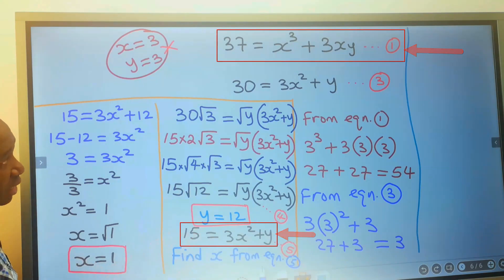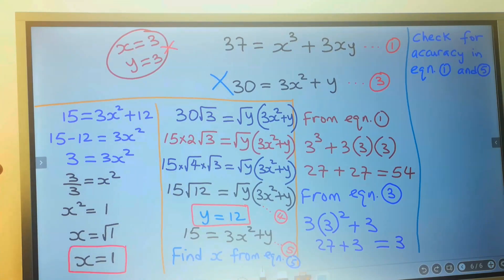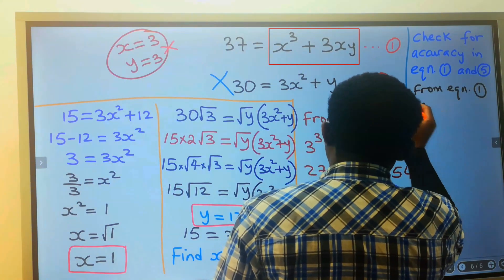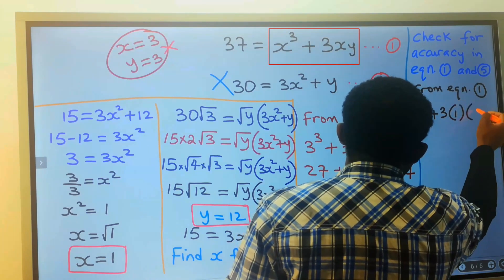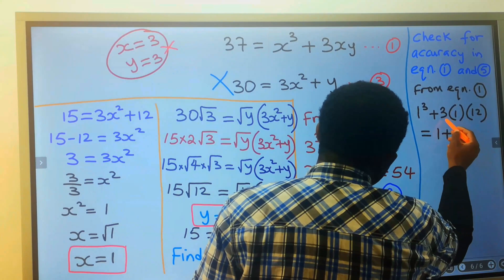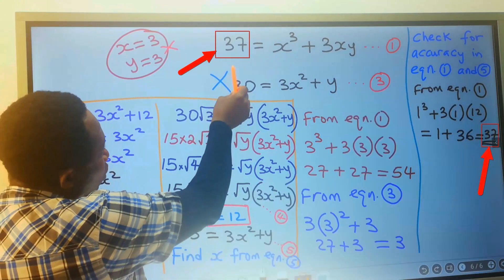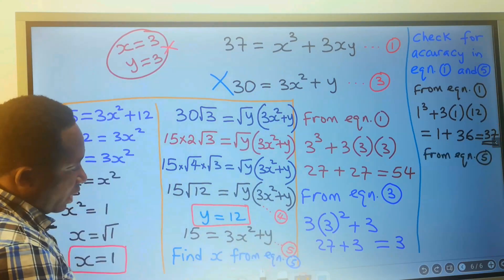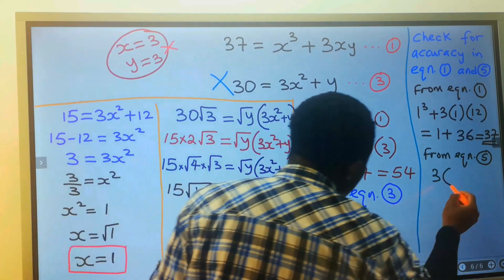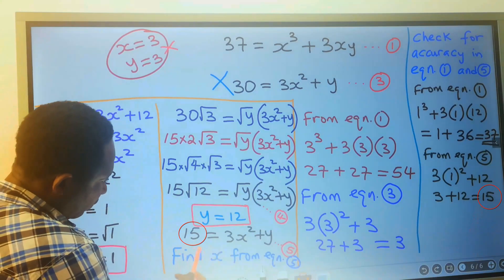Next, we test these results in equation 1 and equation 5. From equation 1: 1 cubed plus 3 times 1 times 12 equals 1 plus 36, which equals 37 — true! From equation 5: 3 times (1 squared plus 12) equals 3 plus 12, which equals 15 — also true. Both equations are satisfied.